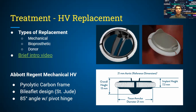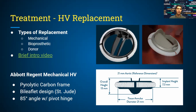Bioprosthetic valves use tissue taken from either a porcine or bovine organism — a pig or cow — and they are good in terms of biomechanical properties. The key difference between mechanical and bioprosthetic valves is that with a mechanical replacement, you typically have to take anticoagulant supplements in the form of warfarin or heparin to prevent clotting.